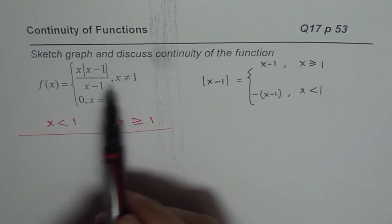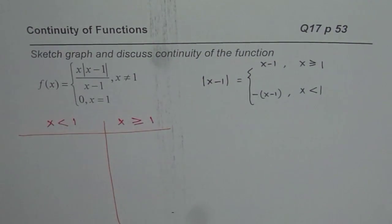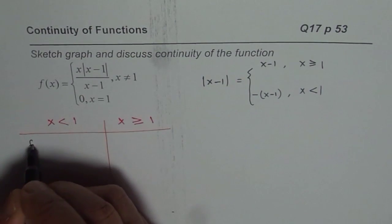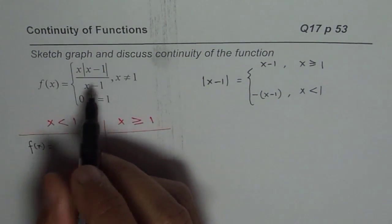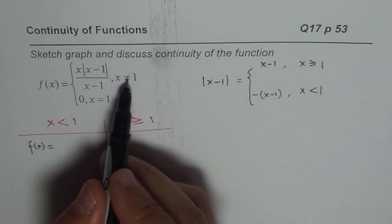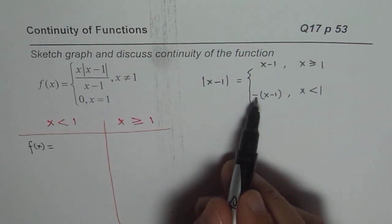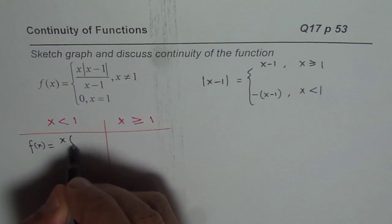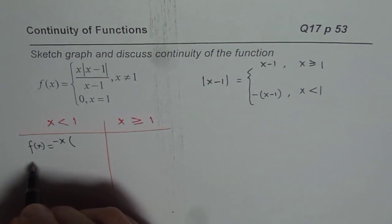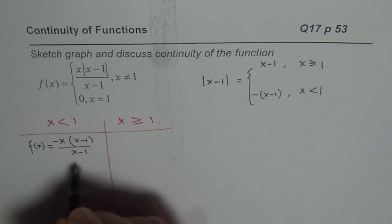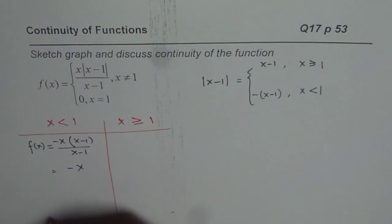Now, we are given here that f(x) is equal to all this. So when it is less than 1, in that case f(x) equals, I mean not equal to 1 but less than 1, then the absolute part could be written as minus (x-1). So I'll write this as x times minus of (x-1) divided by (x-1). And (x-1), (x-1) cancel, we get -x.